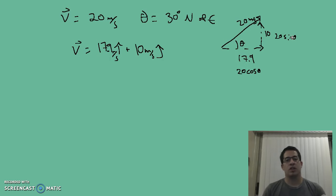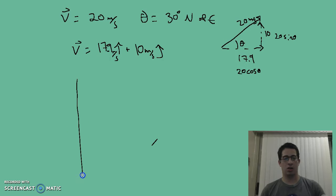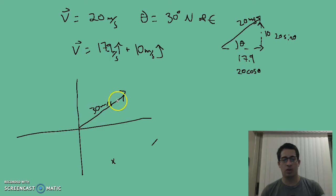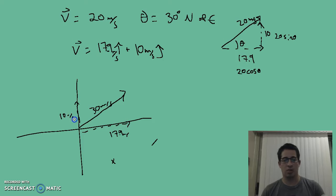Now we have this velocity vector in unit vector notation. Looking back at our coordinate plane, if this is our velocity vector and you see something going at 30 meters per second, we're projecting it to the horizontal axis. To a person standing along the horizontal, the object looks like it's going about 17.9 meters per second. And to a person standing along the vertical, it looks like it's going about 10 meters per second.